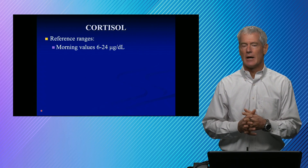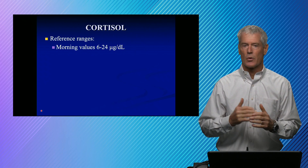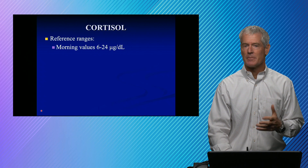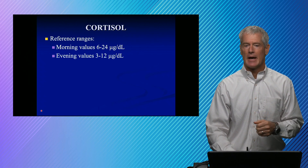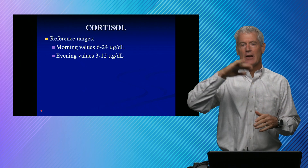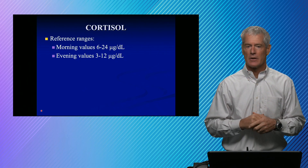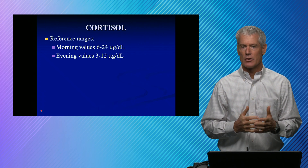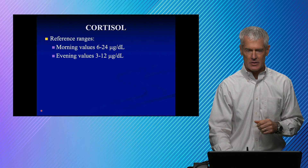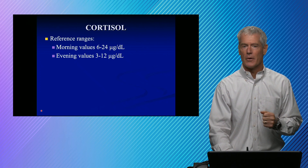Cortisol has a diurnal reference range — it changes according to time of day. Values are typically highest around 8 o'clock in the morning, and in the evening values are about half of that. That diurnal variation is expected in a normal person. Sometimes in the setting of Cushing's, that diurnal variation is abolished. Typically, AM cortisol measurements are the most informative.